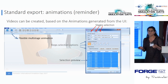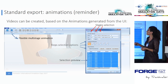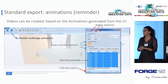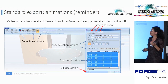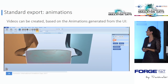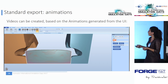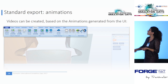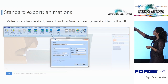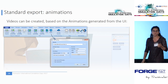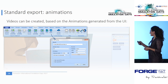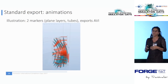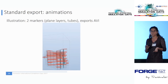Once the animation is created, the animation controls buttons will be activated. The animation can then be exported as a video: it can be an AVI, a GIF, or an MPEG video, and it can be compressed. Here we see an AVI video using two markers — the plane layers and the tubes. However, in this type of video you cannot rotate or change the view angle.